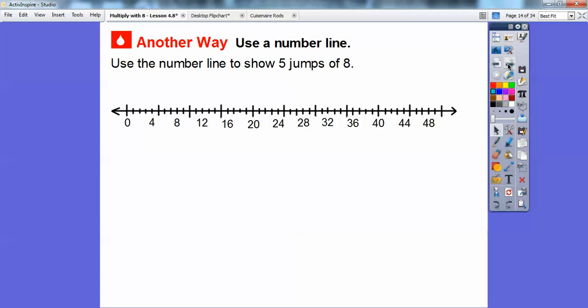Another way is we can use a number line. Use the number line to show five jumps of eight. There's one jump that takes me to 8, two jumps to 16, three jumps to 24, four jumps to 32, and finally five jumps to 40. So five jumps of eight is forty. 5 × 8 = 40.